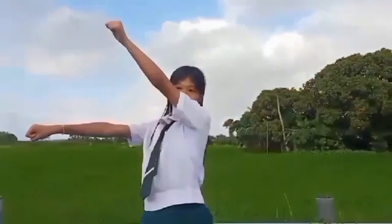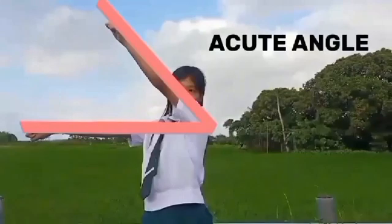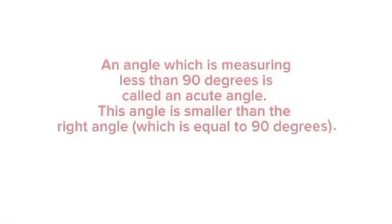These are the six types of angles. Acute angle: an angle which is measuring less than 90 degrees is called an acute angle. This angle is smaller than the right angle, which is equal to 90 degrees.